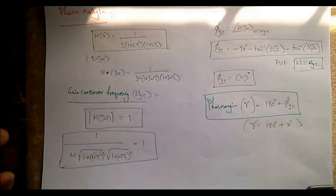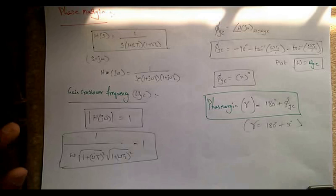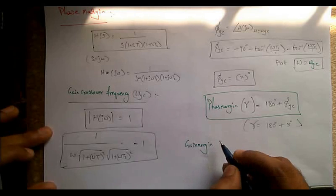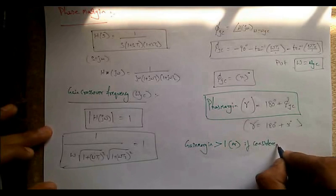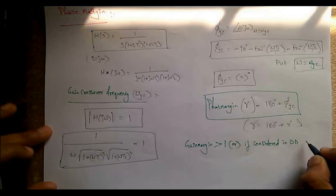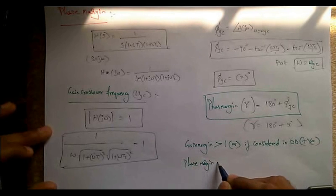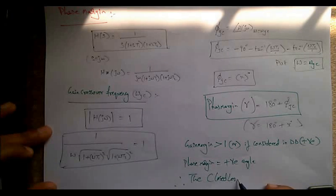The key point: gain margin and phase margin are calculated from the open loop transfer function, but they tell us about the stability of the closed loop system. For stability, the gain margin should be greater than one (positive in decibels), and the phase margin should be a positive angle. If both conditions are met, the closed loop system will be stable.